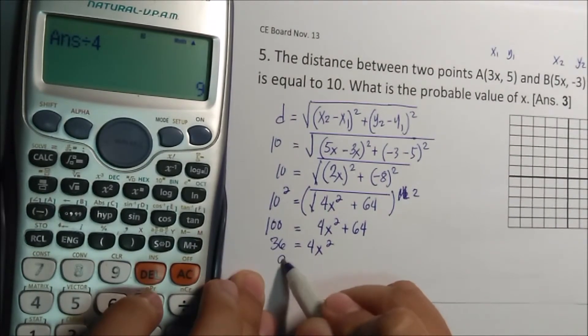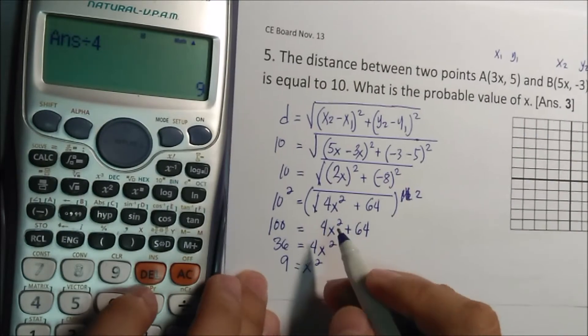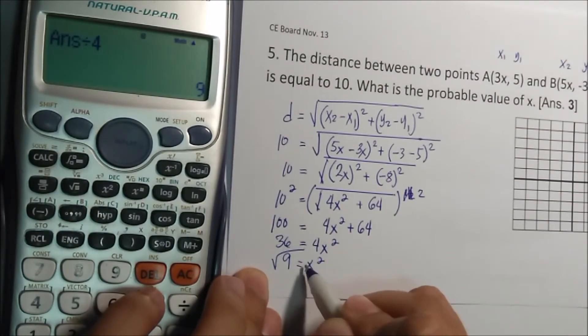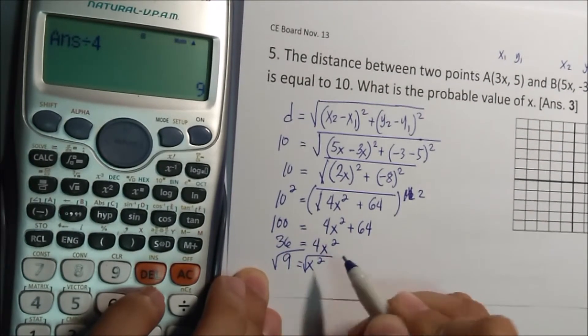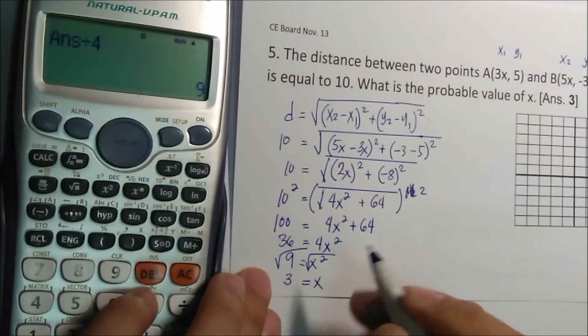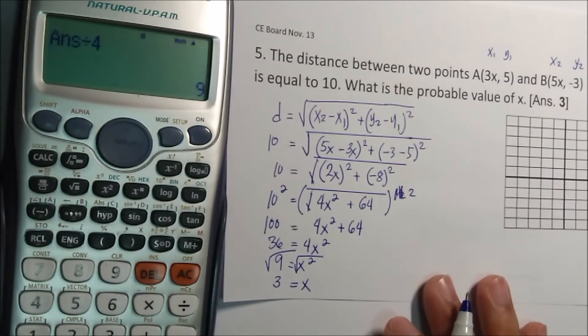So this will be 9x squared. Square root of 9, square root of x, that is x equals 3. The answer is 3.